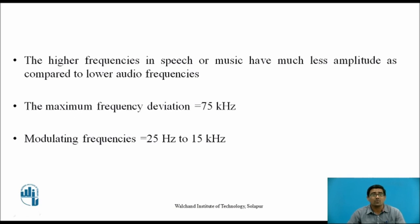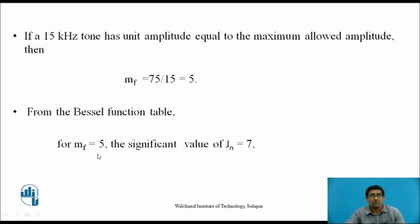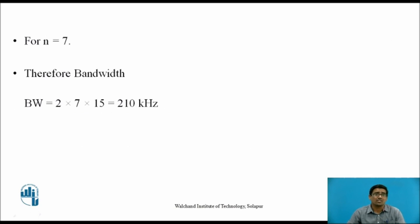Now we calculate the bandwidth. If a 15 kHz tone has a unit amplitude equal to the maximum allowed amplitude, then the modulation index MF for that frequency is equal to 75 divided by 15, which equals 5. For MF = 5, we calculate the value of Jn using the Bessel function table; the significant value of n is equal to 7. Therefore, putting all values into the bandwidth equation: Bandwidth = 2 × 7 × 15 = 210 kHz.